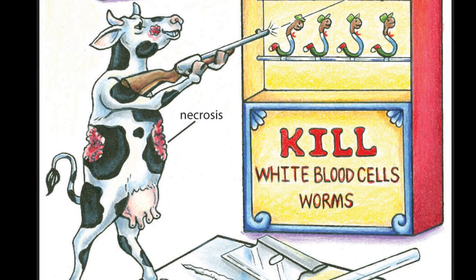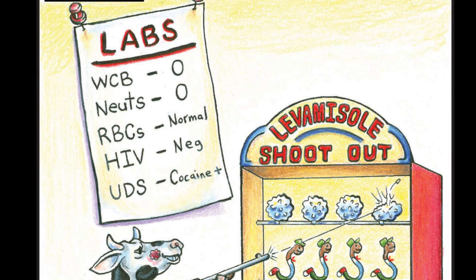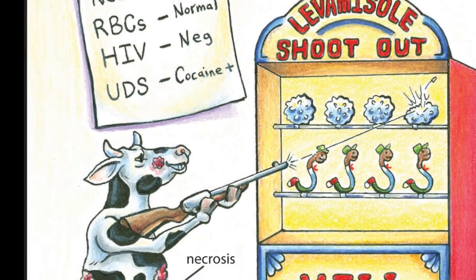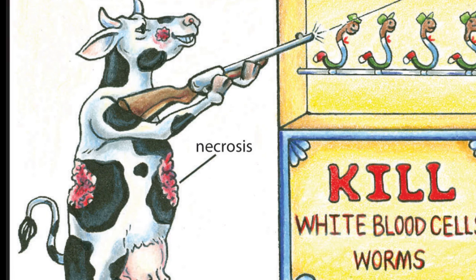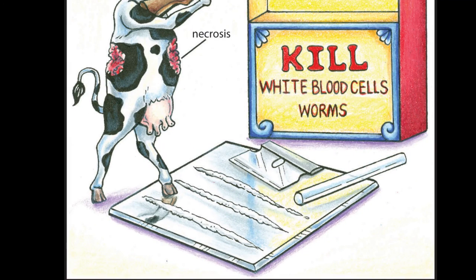Levamisole is a deworming agent used in veterinary medicine to kill worms in cattle. It causes a dose-dependent depletion of granulocytes, including neutrophils, and can also cause areas of skin necrosis and vasculitis. Levamisole was initially used as an immune modulator in adjunct treatment of colon cancers, but due to significant agranulocytosis, its use is now limited to an anti-helminthic agent in veterinary practice. About 75% of the U.S. cocaine supply contains levamisole, and the amount is increasing.